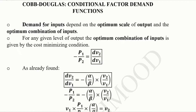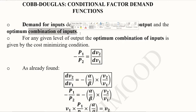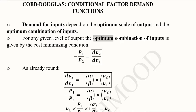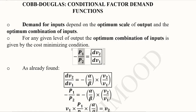The assumption on the basis of which we can develop the conditional factor demand functions is that we start from the optimum scale of output and optimum combination of inputs. That situation happens when we are doing cost minimization. The optimum combination of inputs happens at the point where the isocost line is tangent to the isoquant — that is, when the slope of the isocost line is equal to the slope of the isoquant.